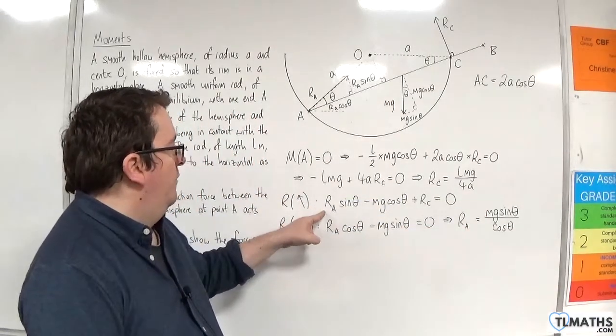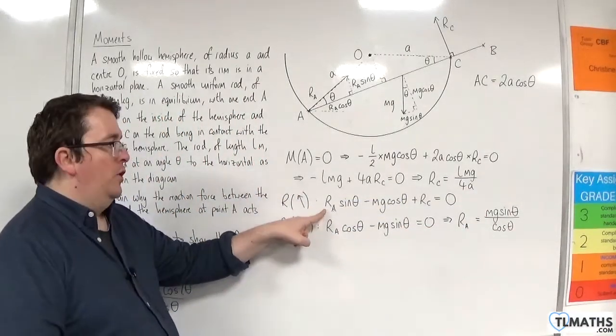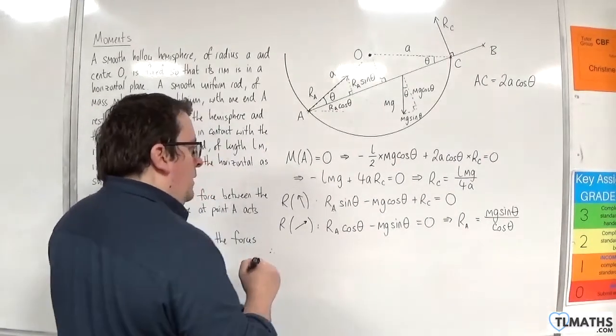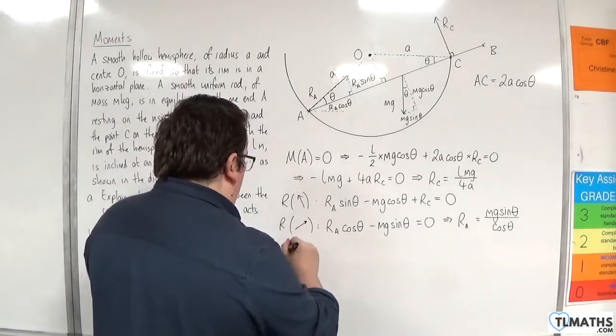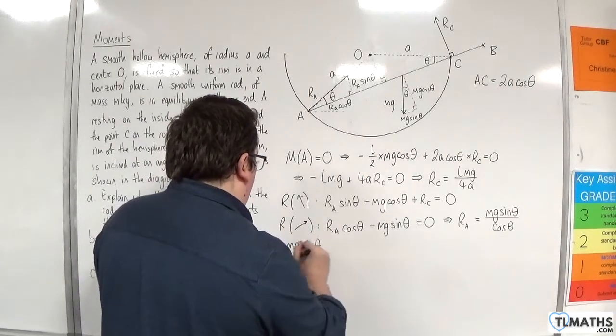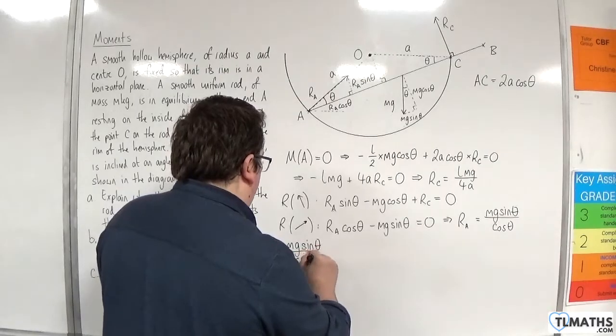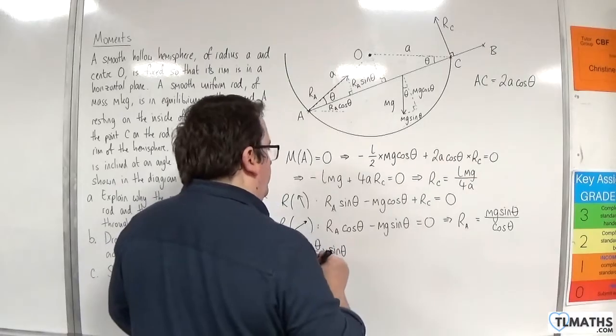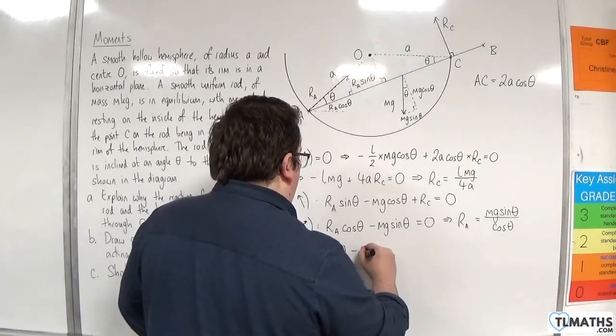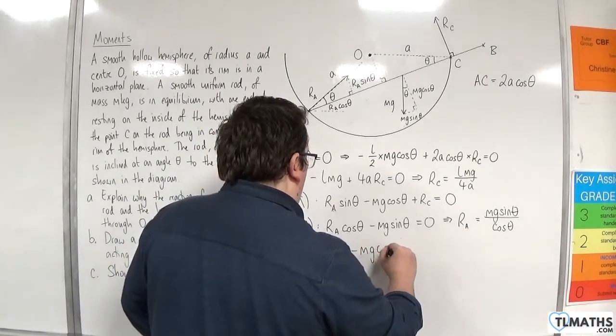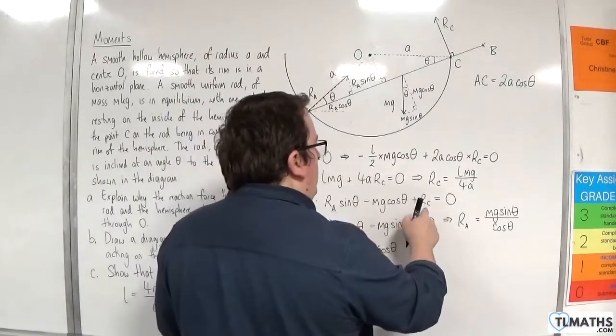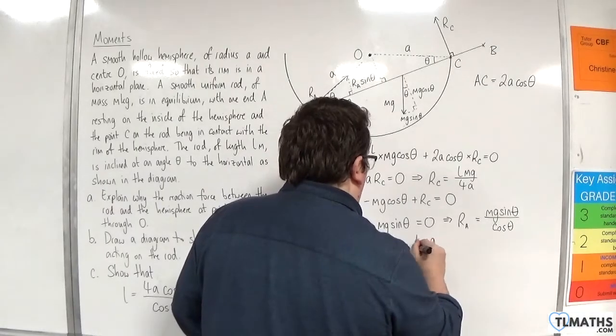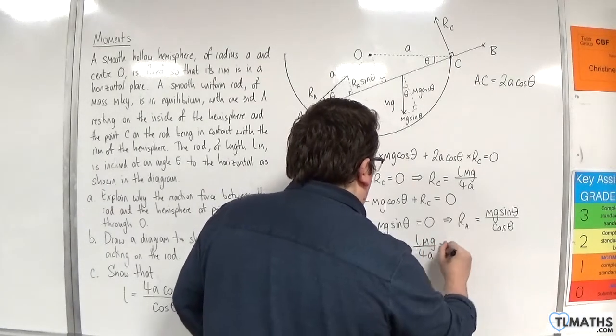And I've got R C in terms of L M G and A. So I can substitute all of those into this equation here. So therefore, the R A is M G sine theta over cosine theta, and I'm timesing that by sine theta. Take away M G cosine theta plus the R C, which is L M G over 4 A. And that's equal to 0.